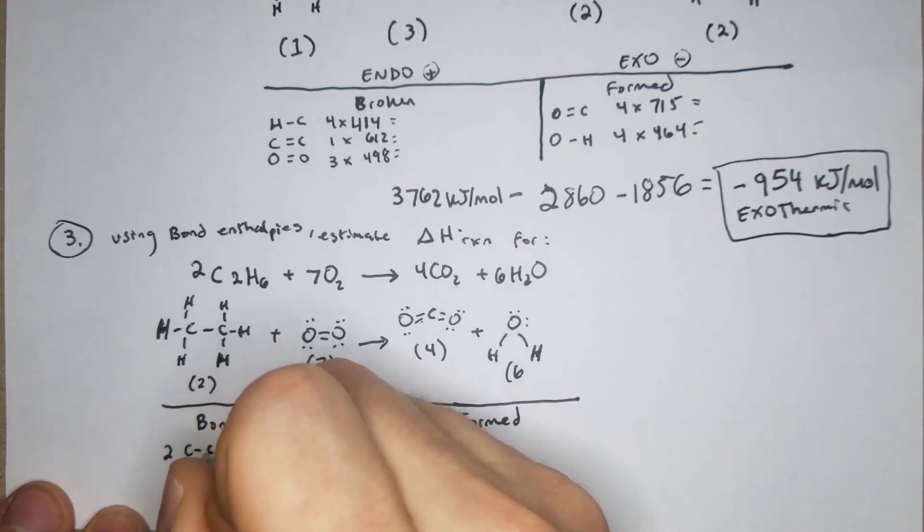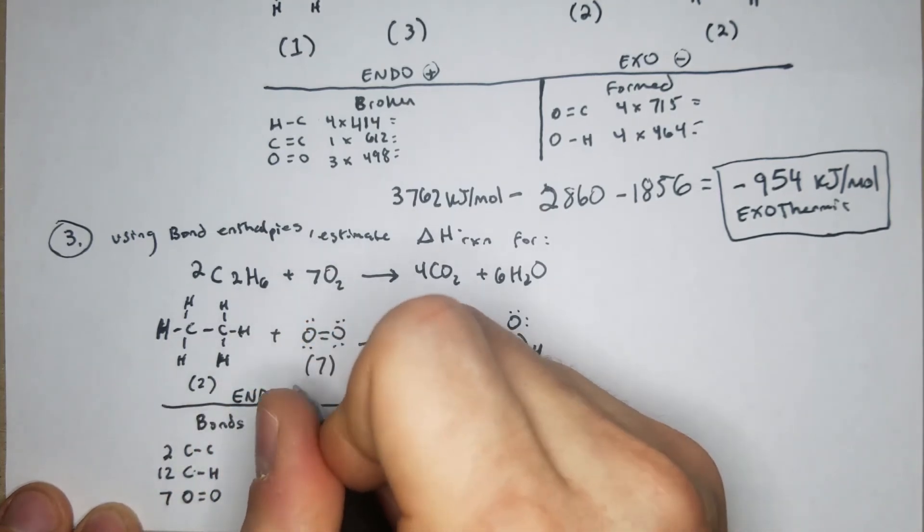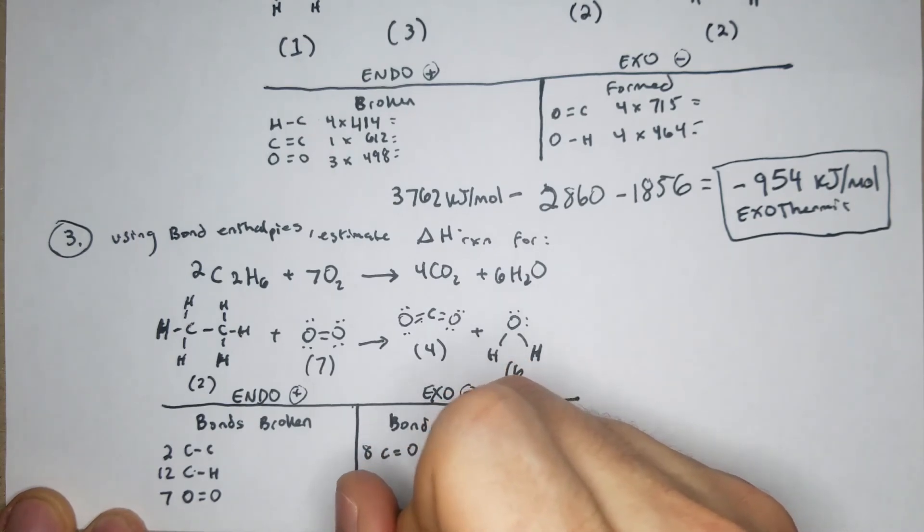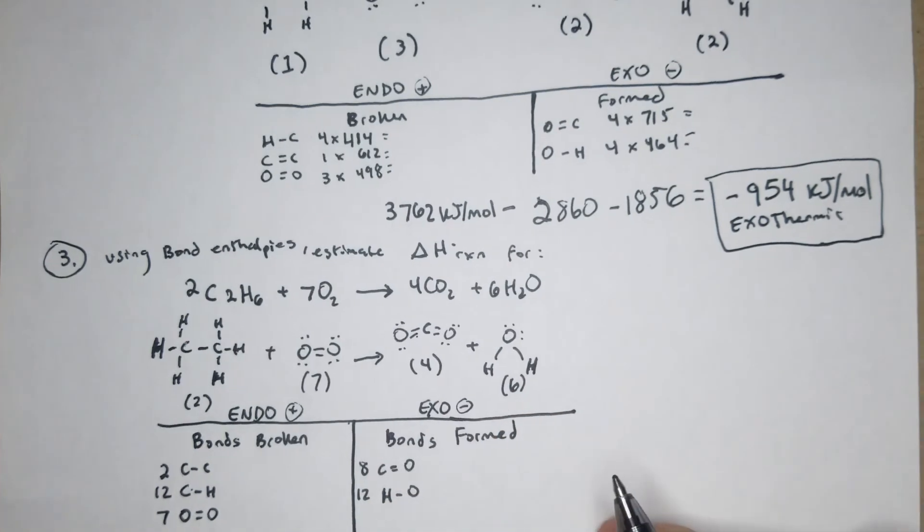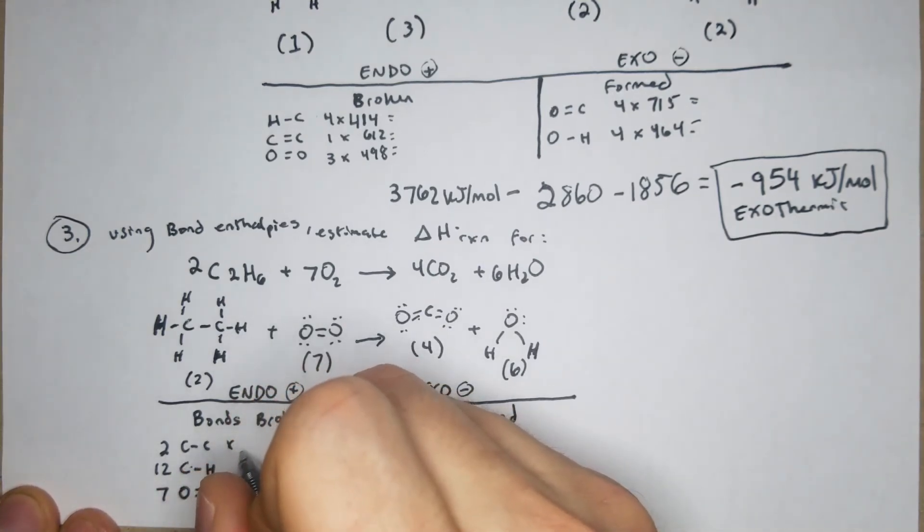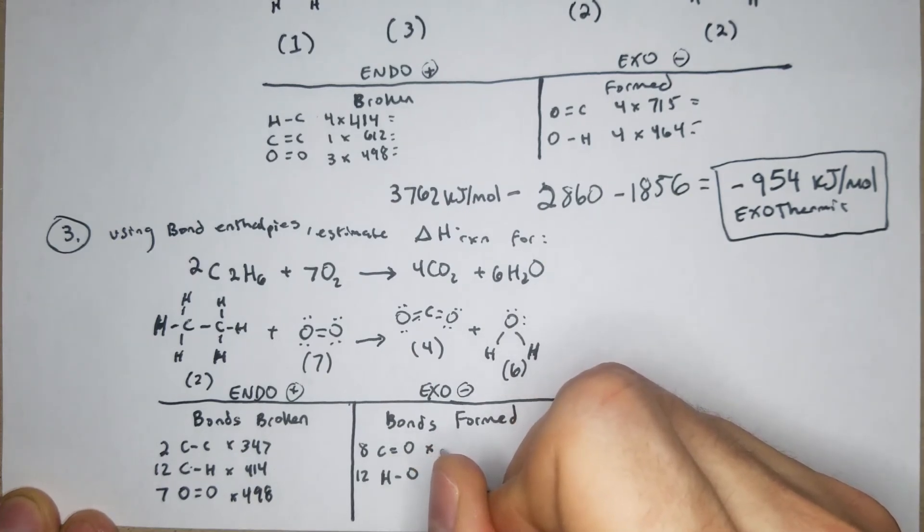So we have over here two C-C, we have 12 C-H, we have 7 O=O, and again this is endo. And then over here we have 8 C=O, and we have 12, actually yeah 6 times 2, H-O. So now let's see, can we cancel anything out? Nope, doesn't look like we can, that's too bad. Then we're just going to multiply it out. That is 12 times 414, that is 7 times 498, this is 8 times 715, this is 12 times 464.